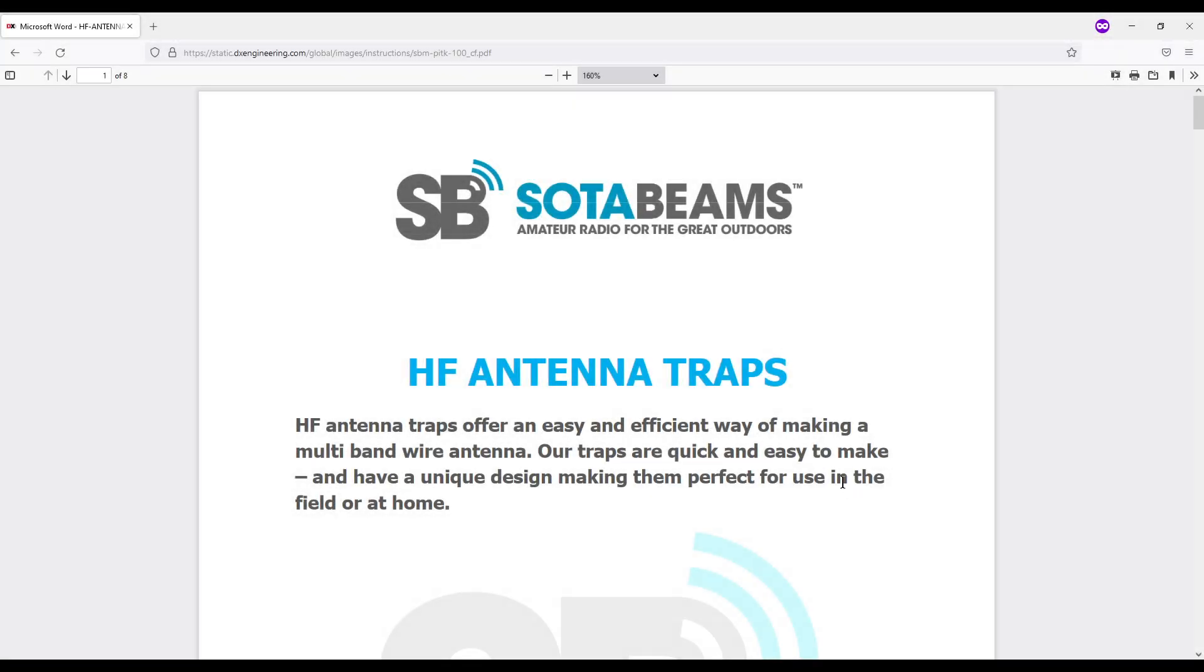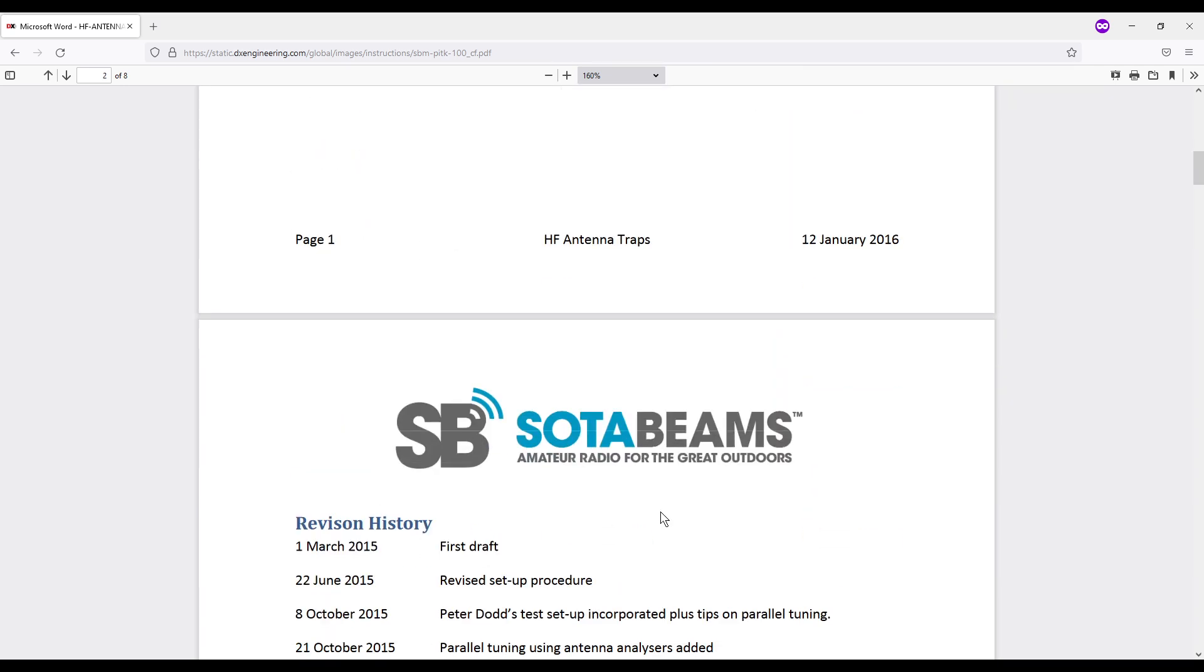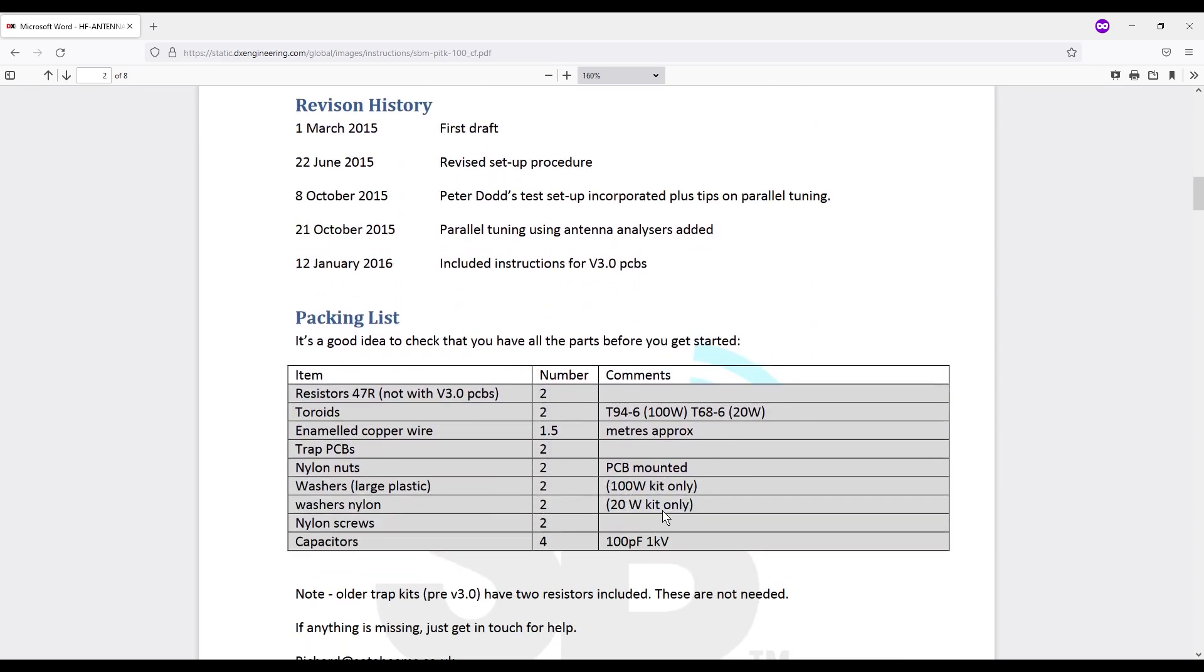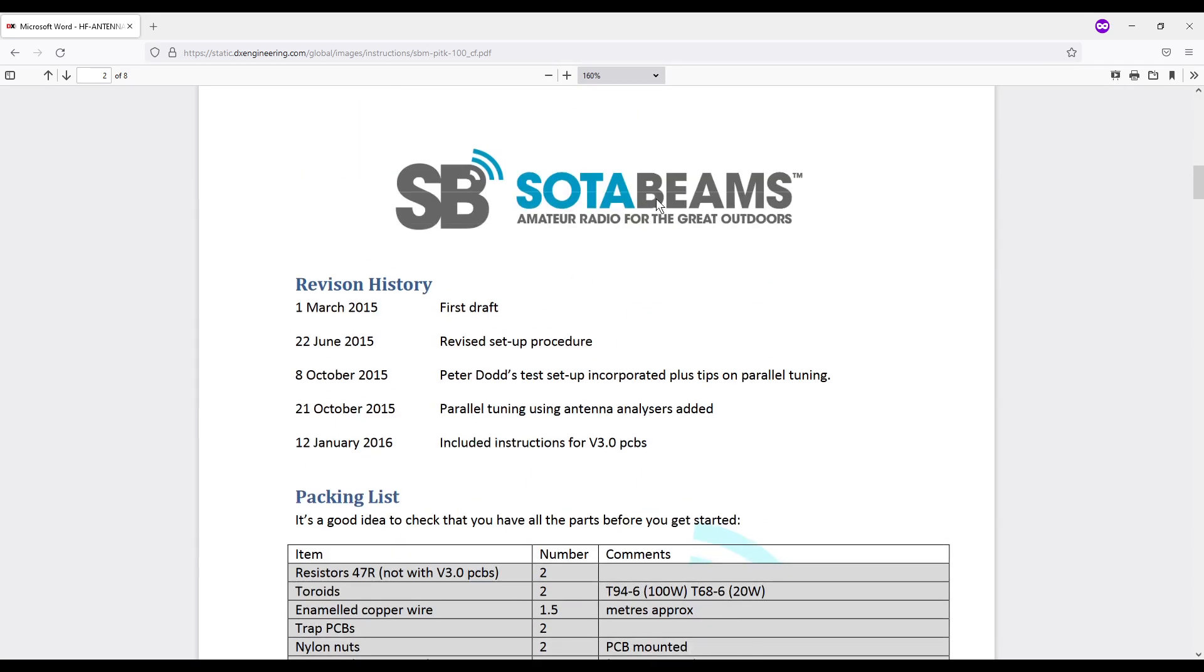Okay, so here's where I got the idea for this particular trap build. Let's just talk about traps real quick. You put a trap in line with an element on an antenna. For example, you can make a 40 meter dipole and then put a trap about at the 20 meter mark, and then that dipole is now usable on both of those frequencies without further adjustments. Now you can order this Sotabeams kit.